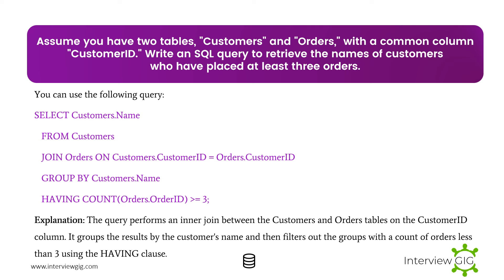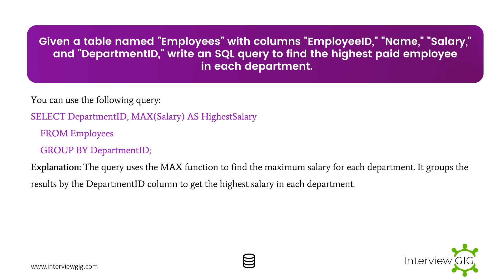Next Scenario: Assume you have two tables, Customers and Orders, with a common column Customer ID. Write an SQL query to retrieve the names of customers who have placed at least three orders. The query performs an INNER JOIN between Customers and Orders on Customer ID, groups results by customer name, and filters out groups with a count of orders less than three using the HAVING clause.